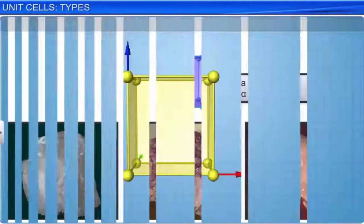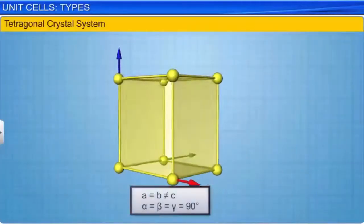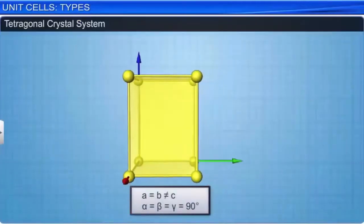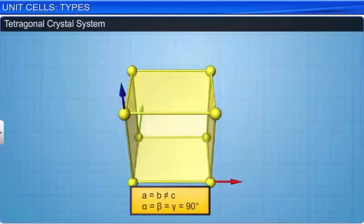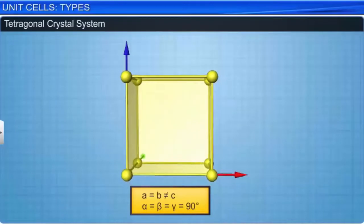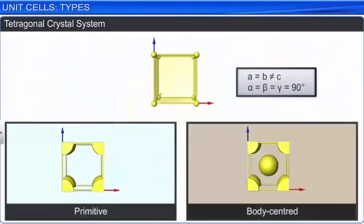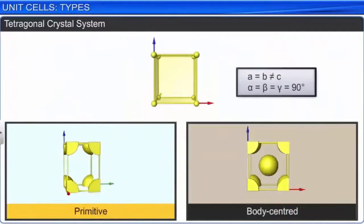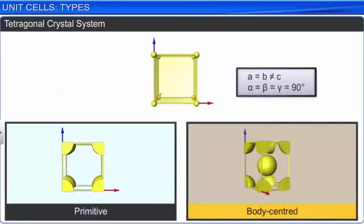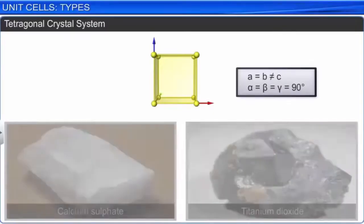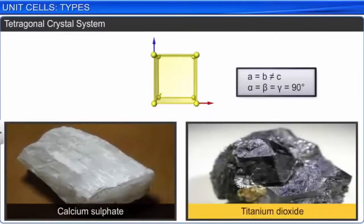In a tetragonal crystal system, the three axes are at right angles to each other, but only two are equal. The possible lattices are primitive and body-centered. Calcium sulfate and titanium dioxide are examples of this type of crystal structure.